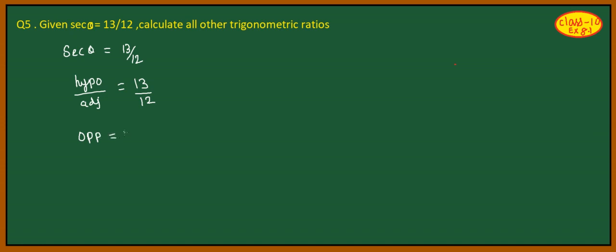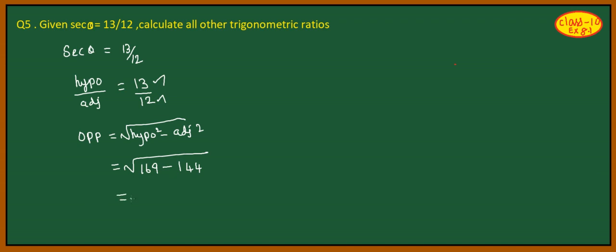We want the opposite side. The formula is: opposite side is equal to square root of hypotenuse squared minus adjacent side squared. So, square root of 13 squared — we get 169 — minus adjacent side squared. Adjacent side is 12, so 12 squared equals 144. Opposite side equals square root of 169 minus 144, which gives us 25. So opposite side equals root 25, which is equal to 5.